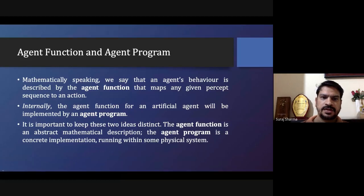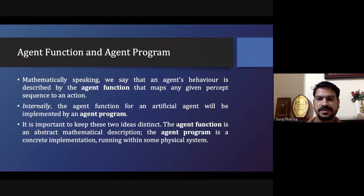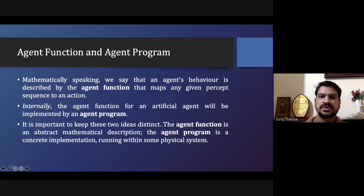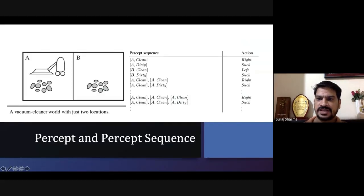There is a difference between agent function and agent program that we have learned. An agent function for an artificial intelligence agent will be implemented by an agent program. These actions are essentially the functions for the agent, and with the help of the agent program we write the program to perform these actions.